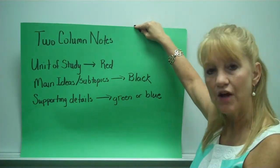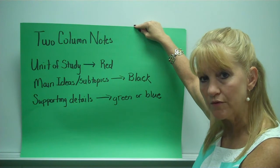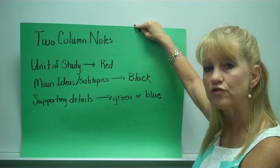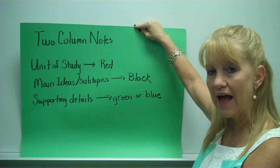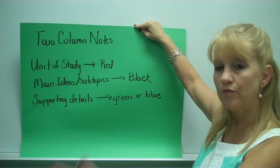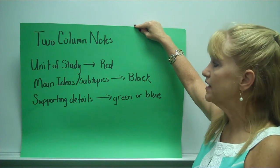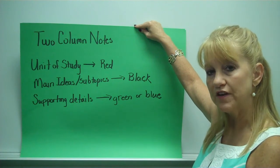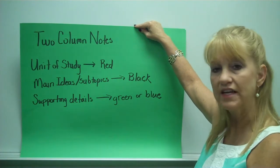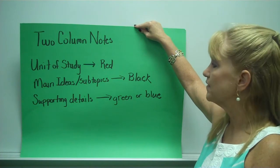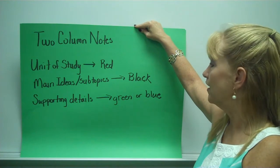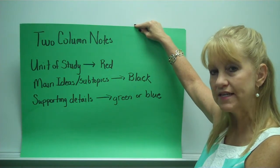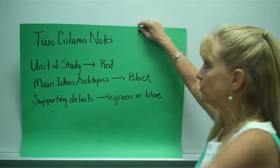When students take notes, they'll be taking two-column notes, also referred to as Cornell notes. Students will divide their paper in half and then watch the lectures. On the lectures or the video, you will see that my unit of studies is written in red. My main ideas and sub-topics will be in black and my supporting details will be in green or blue.